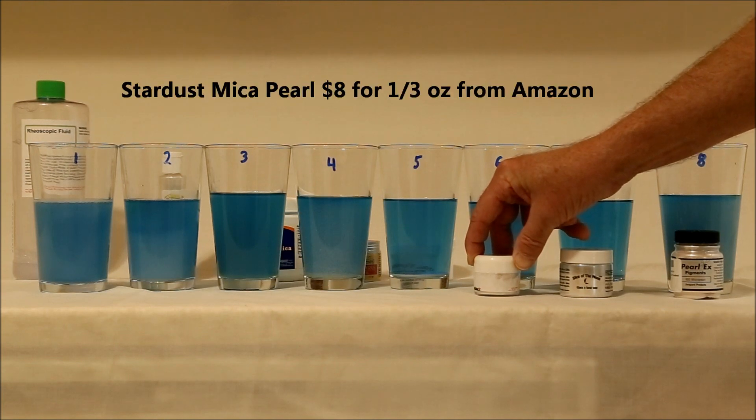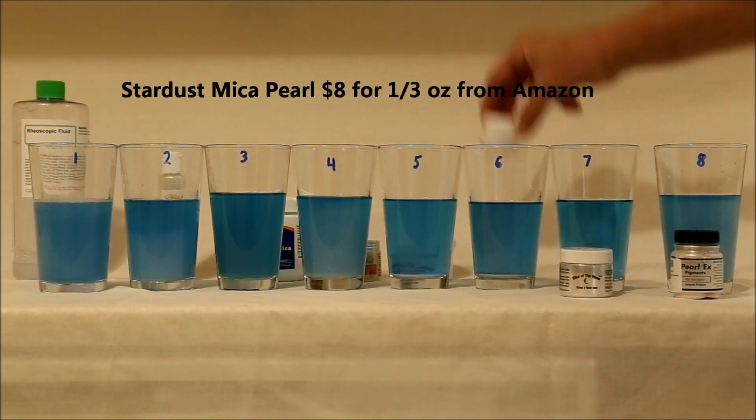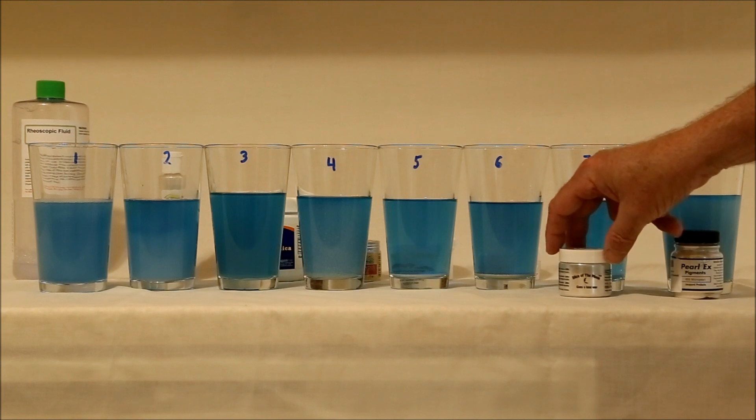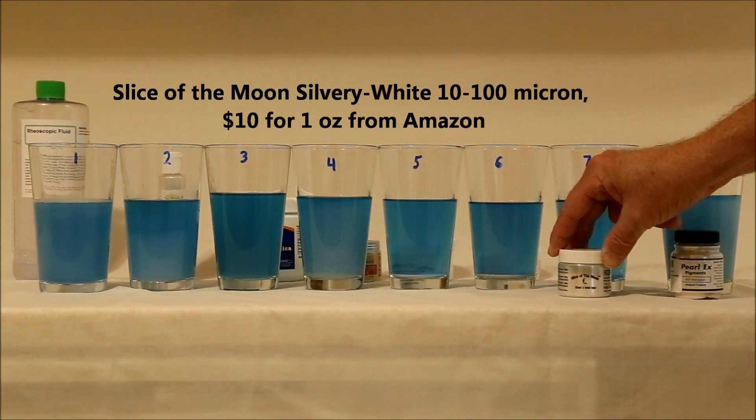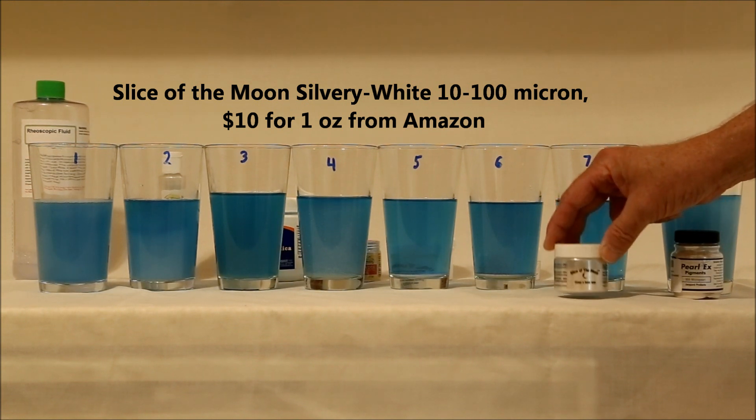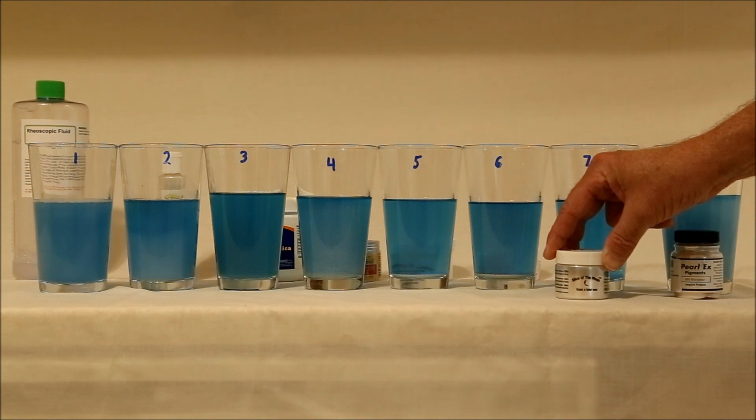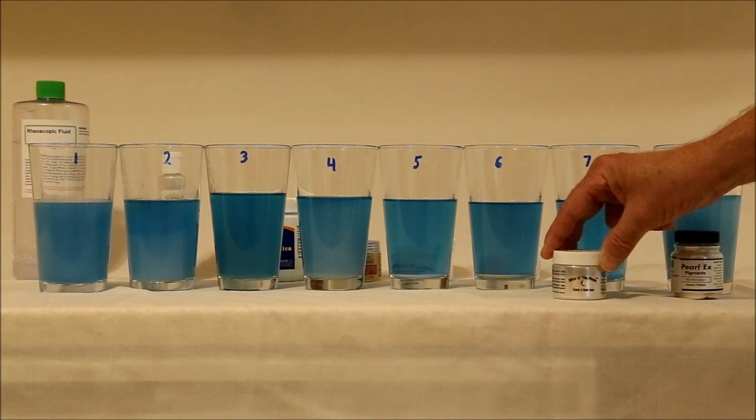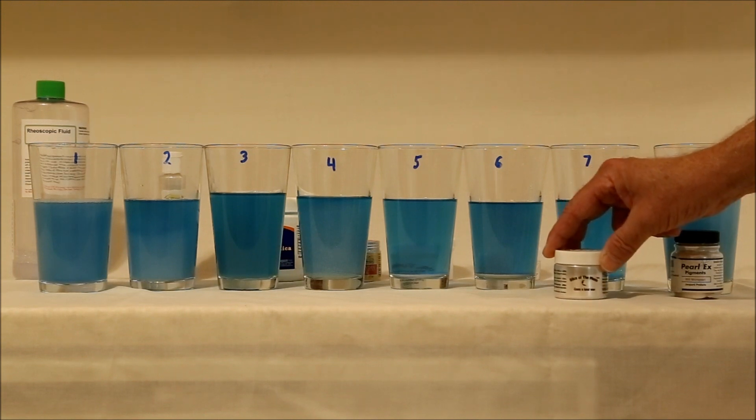Six is Stardust Mica Pearl. Seven is Slice of the Moon Silvery White. This is the 10 to 100 micron Mica. You have to be careful ordering this stuff because all the bottles look the same and they have about five or six different types and they each have different size mica particles. You want the smallest they have and I think this is it.